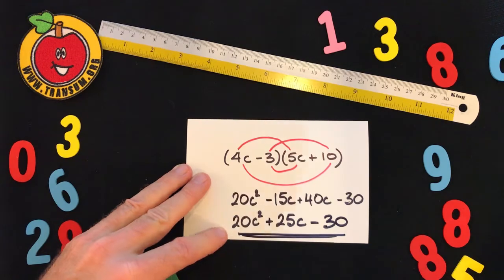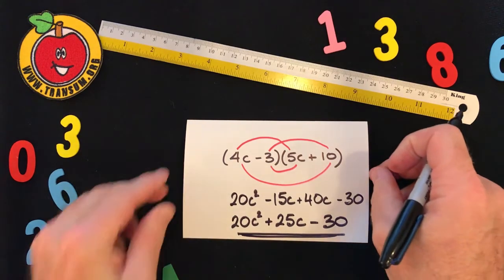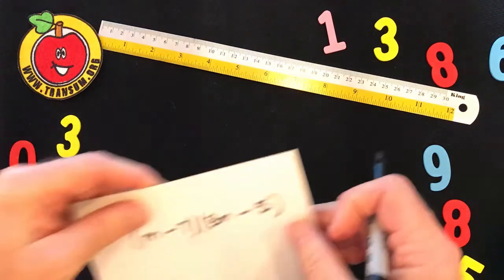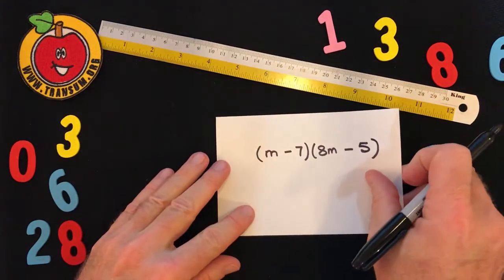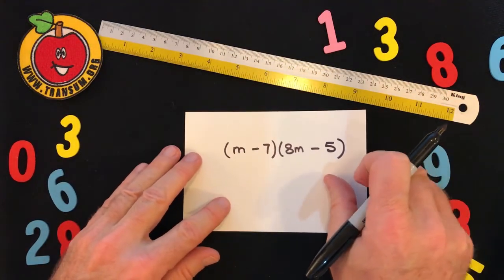This is called expanding brackets. It's a way of writing down the expression without using any brackets.